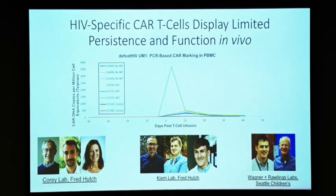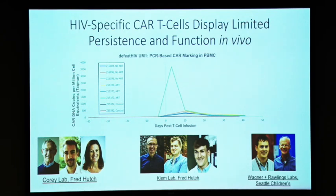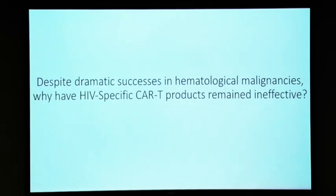In work that we've done in our Defeat HIV collaboratory in collaboration with Larry Corey's lab, Thor Wagner, and David Rawlings at Seattle Children's, the limitation we've seen is that when we infect animals with an HIV-like virus called SHIV and either suppress them on ART or leave them unsuppressed and put these CAR T-cells in, they tend to disappear over time. This is in stark contrast to what's been seen for virus-specific CARs. So the question we wanted to address is: even though these CAR molecule-modified cells work so well for cancer, what are the limitations still in existence for HIV-specific CAR products, and how can we overcome those?